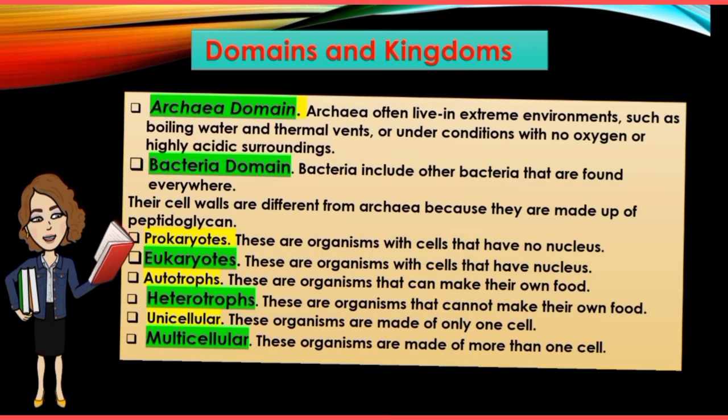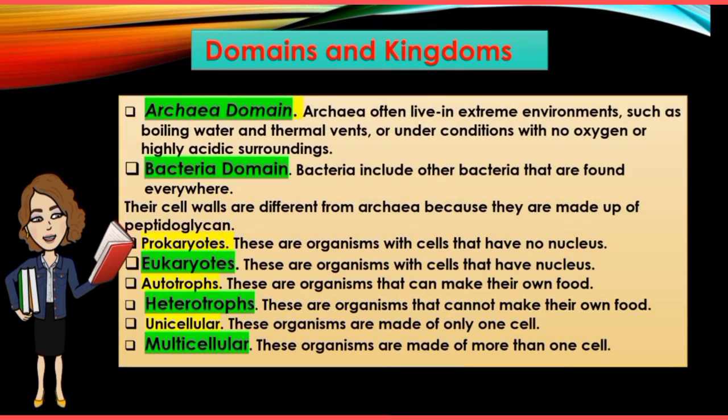Looking at other characteristics: Archaea domain organisms often live in extreme environments. Bacteria domain organisms are found everywhere. Prokaryotes are organisms with no nucleus; eukaryotes have a nucleus. Autotrophs can make their own food; heterotrophs cannot. Unicellular means a single cell; multicellular means more than one cell.